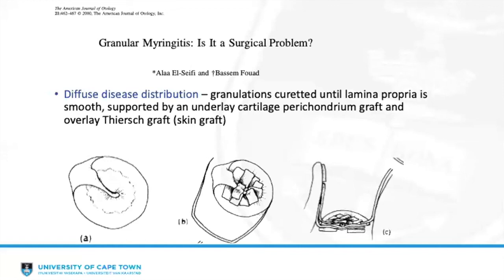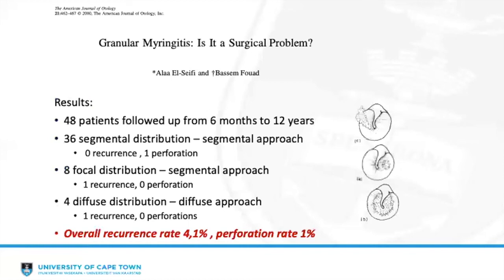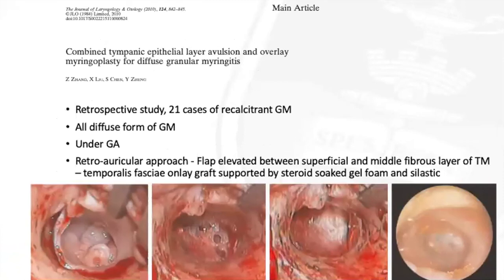For those unfamiliar, a Thiersch graft is essentially a partial-thickness, semi-transparent skin graft taken free-handed by dermatome. Results showed 36 patients treated by the segmental approach had no recurrence on follow-up ranging from 6 months to 12 years, with only one perforation reported. Eight had focal disease treated by the same segmental approach with one recurrence at two months. Four had diffuse disease treated by the diffuse approach with only one recurrence at 10 months.